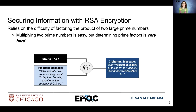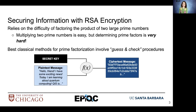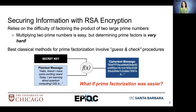Think about it. Whenever you multiply two prime numbers, that's relatively easy, but determining the prime factors is very challenging. The best classical methods for prime factorization involve a guess and check type of procedure. It's not very efficient. What if prime factorization was easier?